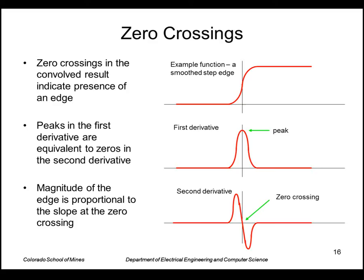We can detect edges by just detecting the locations of transitions from positive to negative or negative to positive. And we can also estimate the magnitude of the edge by looking at the slope of the output of the second derivative operator on the image.